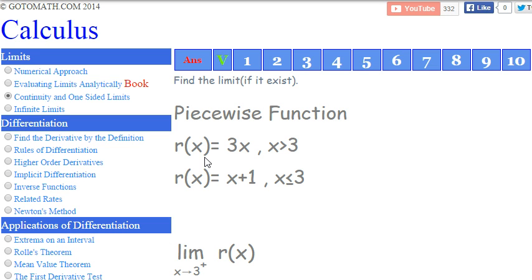We got a piecewise function and I wrote the function this way. This is not the traditional way to do that. When we get on to the whiteboard, I'll show you. We're looking for the limit of r of x as x approaches 3 from the right hand side. So this plus means right hand side.